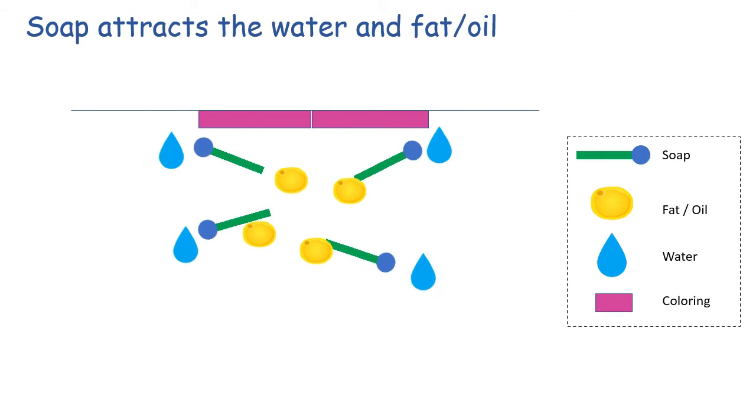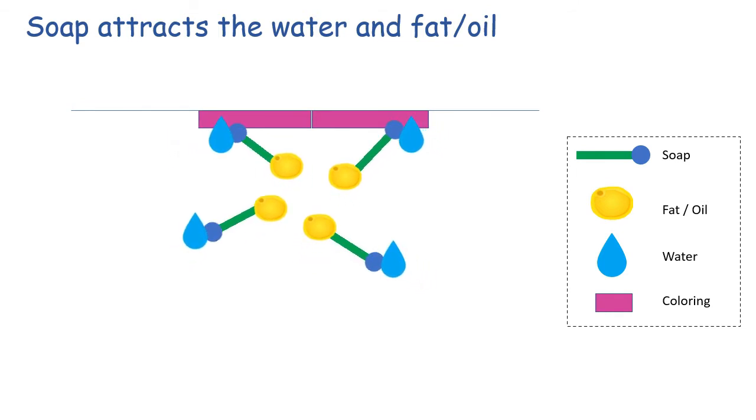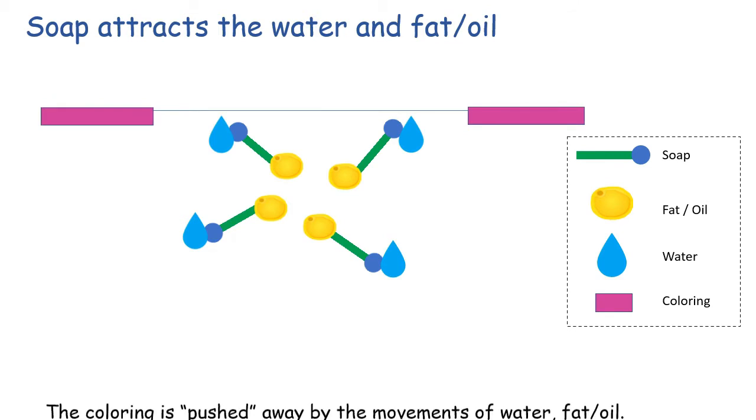The hydrophilic section of the soap molecules is attracted to the water atoms and the hydrophobic section is attracted to the fat and oil. This has caused a lot of chemical reactions, which has resulted in the swirling of the colours in the milk.